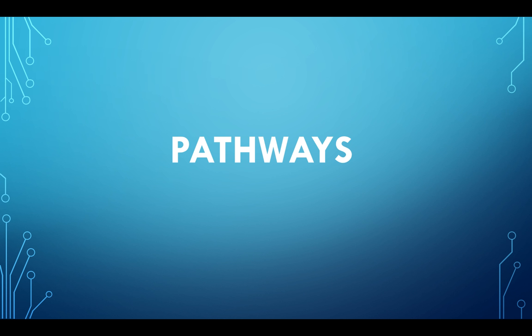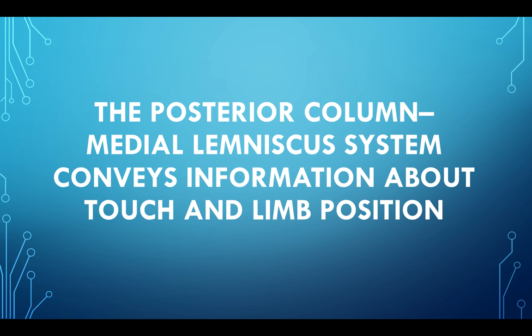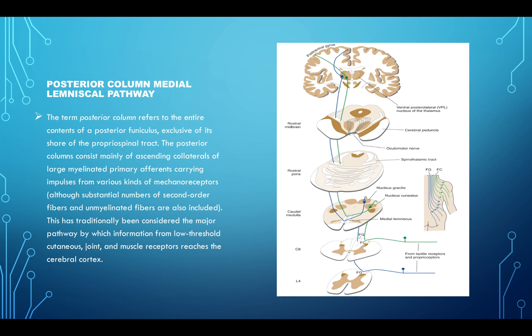The posterior column medial lemniscus system conveys information about touch and limb position — joint position sense, vibration, and light touch. The posterior columns consist mainly of ascending collaterals of large myelinated primary afferents carrying impulses from various kinds of mechanoreceptors. This is traditionally considered the major pathway by which information from low-threshold cutaneous, joint, and muscle receptors reaches the cerebral cortex.